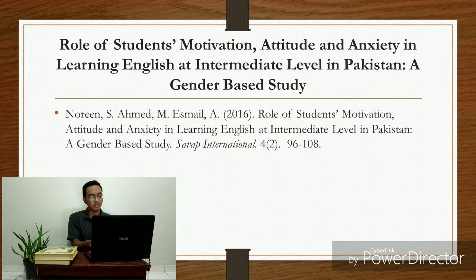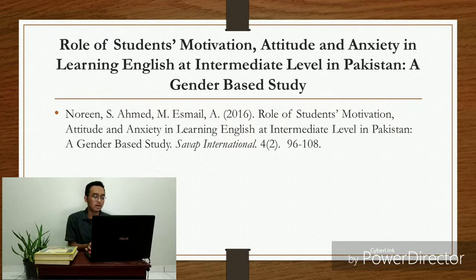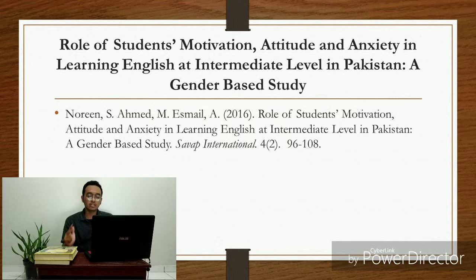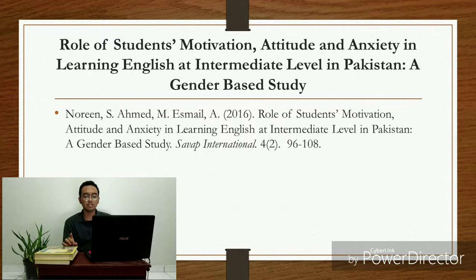Let's move to the fifth article. The fifth article is the role of student motivation, attitude, and activity in learning English at intermediate level in Pakistan. The aim of this study is to highlight the role of three variables — attitude, motivation, and classroom accessibility — toward English language learning at intermediate level in Pakistan. The participants were 100 students. The researcher used questionnaire and observation as the method. The finding, according to the results obtained during the survey, was that females had a higher level of motivation and attitude.